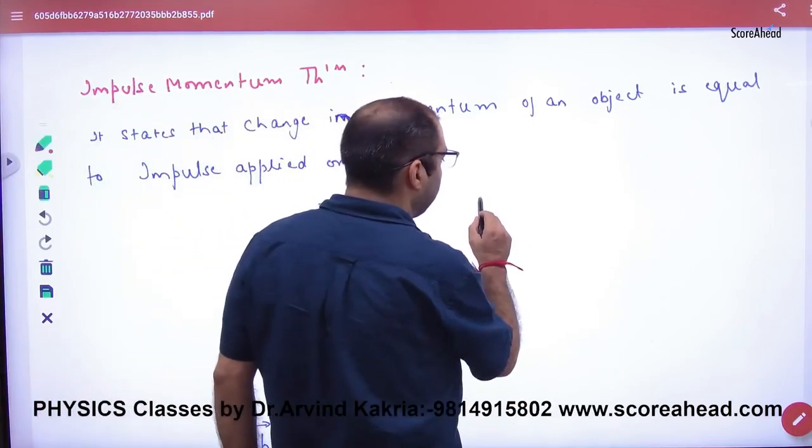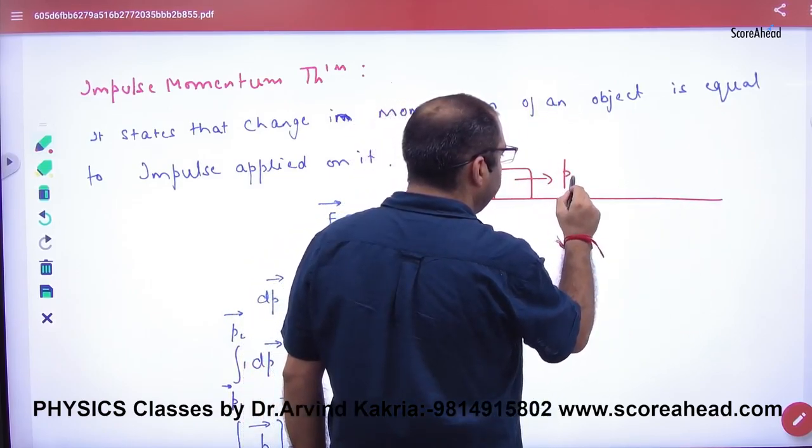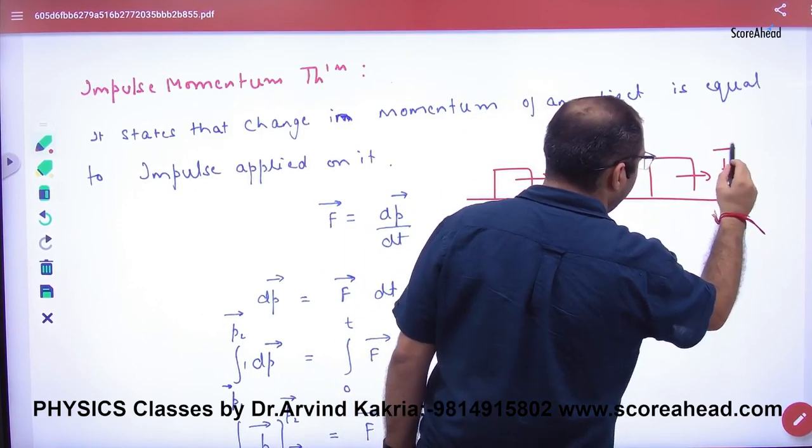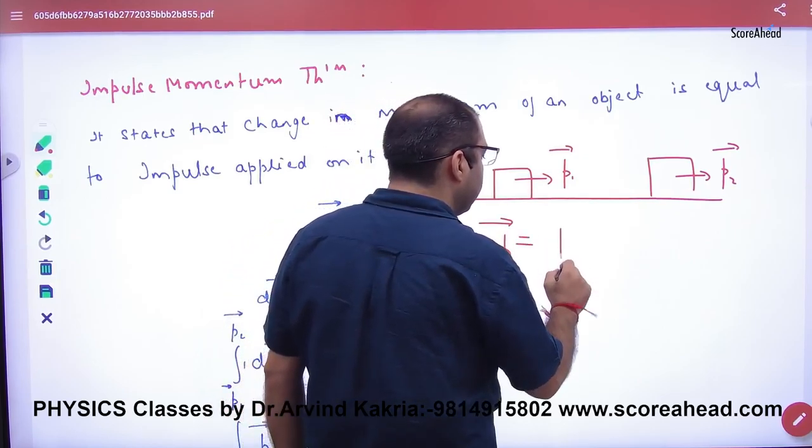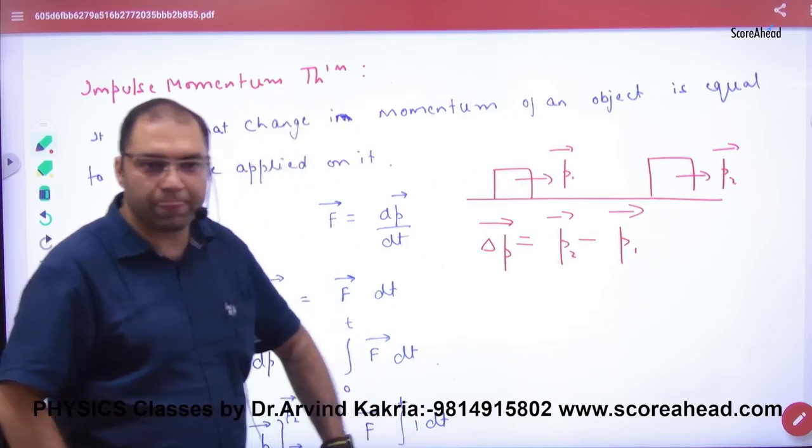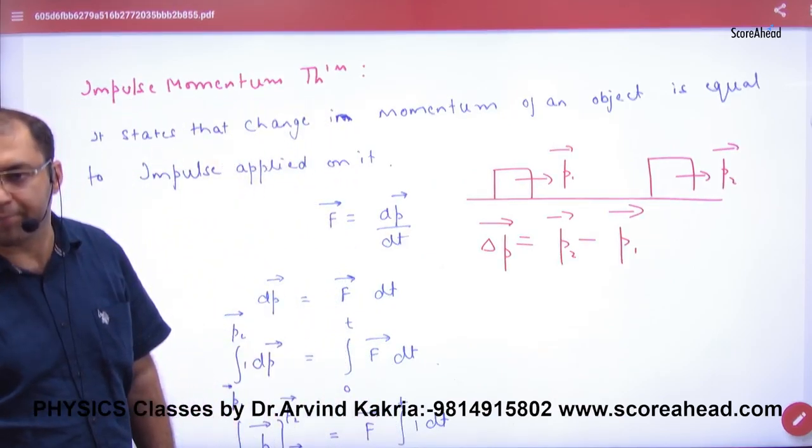Suppose any body has its initial momentum P1 and the final momentum is P2. So what is change in momentum? Change in momentum is equal to P2 minus P1. P2 vector minus P1 vector. Clear?